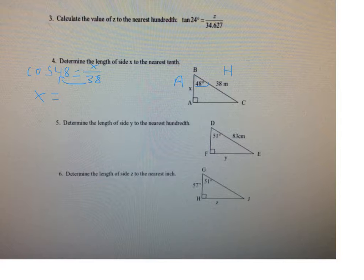So if you take the cosine of 48 and you multiply that by 38, then let's see what we get here. Cosine of 48 times 38: 25.4 meters, okay?